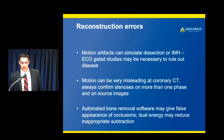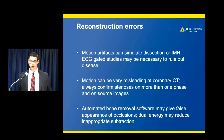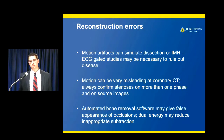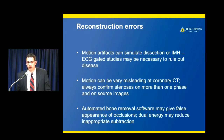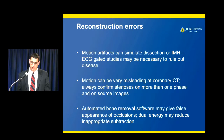To summarize reconstruction errors: motion artifacts can simulate dissection or intramural hematoma — ECG-gated studies may be needed to rule out disease. Motion can be misleading at coronary CT, so always confirm stenosis on more than one phase and on source images. Confirm stenosis on curved planar images against source images. Bone removal software may give false appearance of occlusion — use source images and consider dual energy if available to reduce inappropriate subtraction.